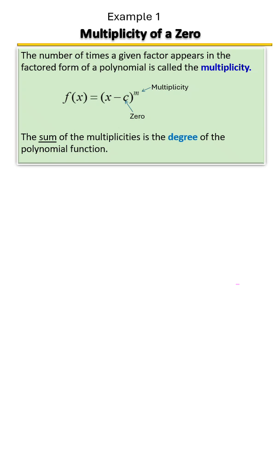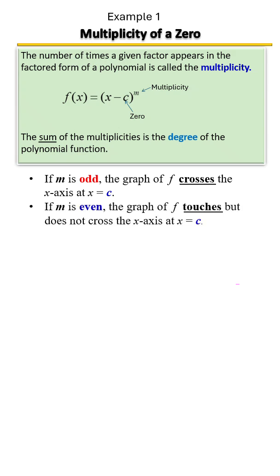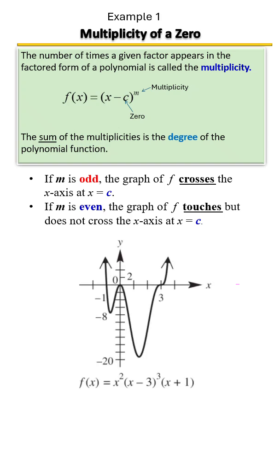You should also know that the sum of all your multiplicities gives you the degree of the polynomial function. If your multiplicity is odd, then the graph of the function will cross the x-axis at that zero. If your multiplicity is even, it's going to touch the x-axis at that zero.